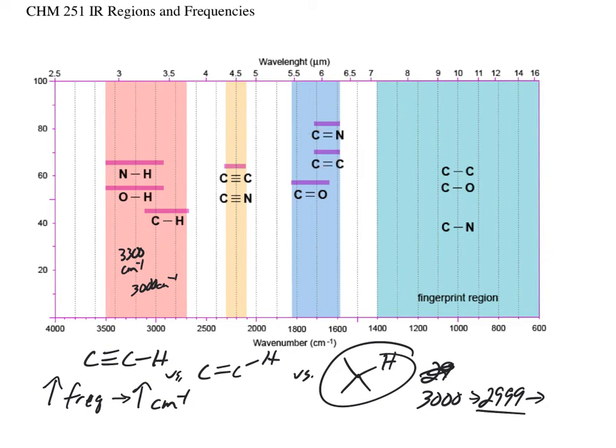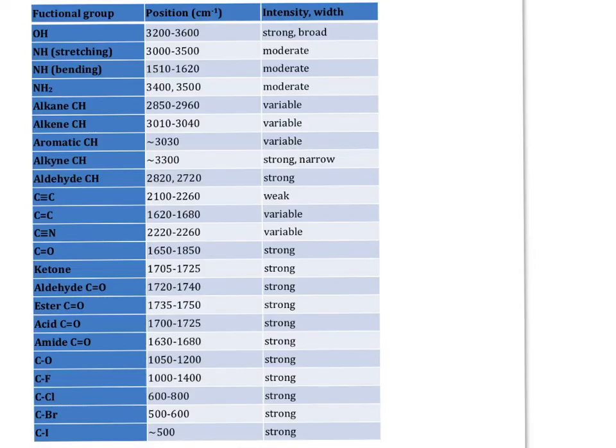And then farther down here, like I said, we're not worrying too much about the fingerprint region. But, again, this is just a tool to tell you what functional groups are present, but not necessarily distinguish what the molecule is. All right, so here's just a table. A lot of times you see this as a table.